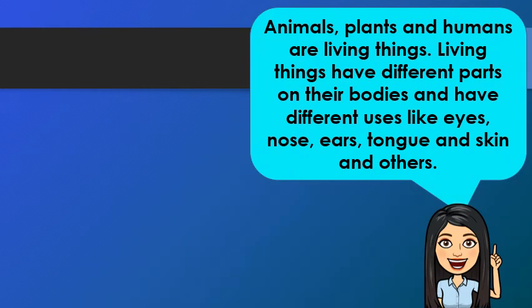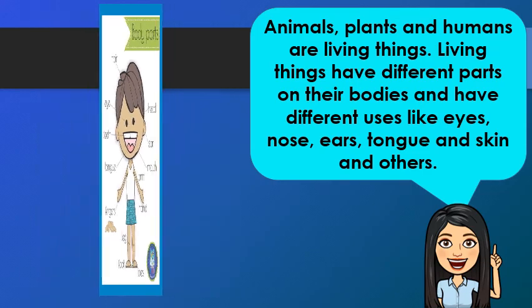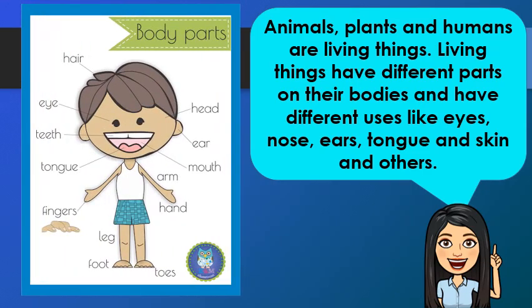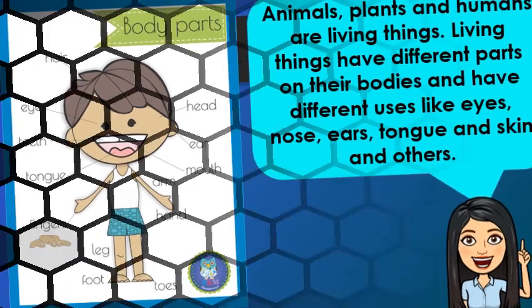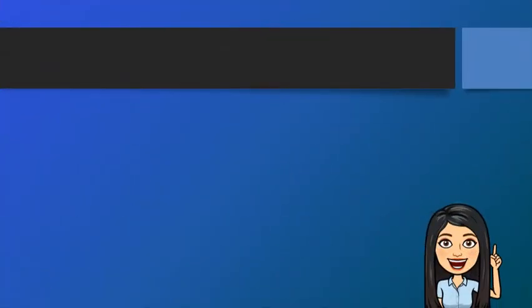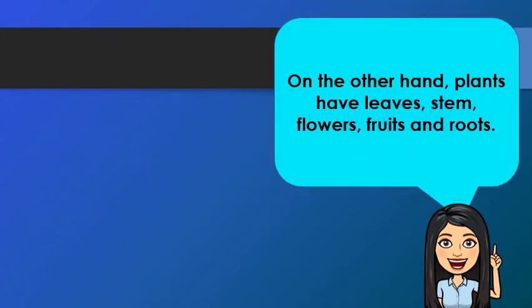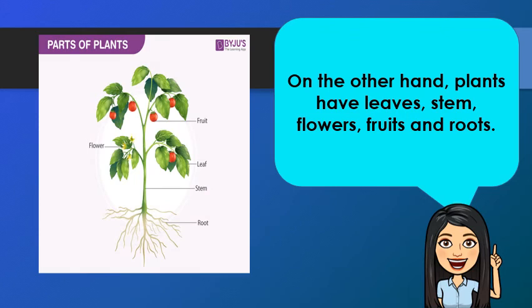Animals, plants, and human beings are living things. Living things have different parts on their bodies with different uses, like eyes, nose, ears, tongue, and skin, and other parts of our body. On the other hand, plants have leaves, stem, flowers, fruits, and roots.